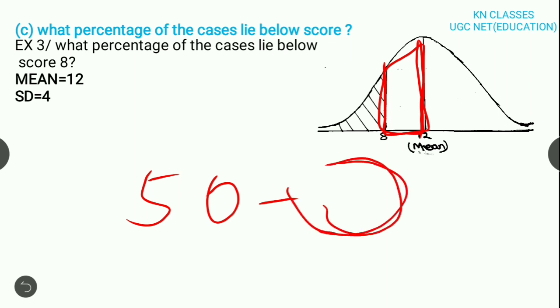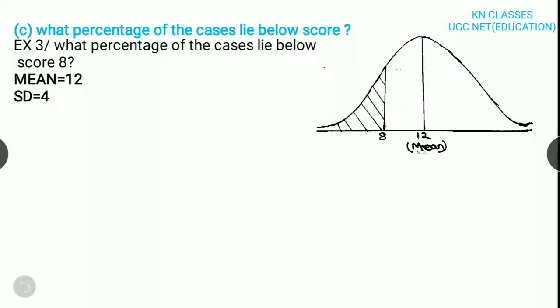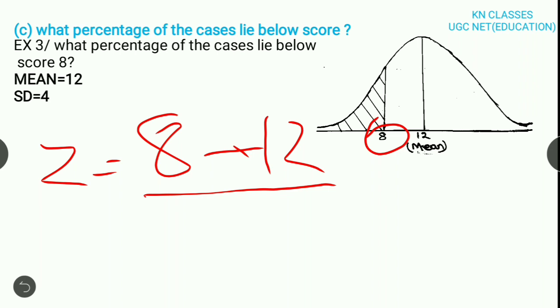I will tell you again. The half of the curve is 50%. Now, we have to find out the cases fall between score 8 to the mean 12. Here, we have a z-score formula. Z is equal to x minus m divided by SD. Here, x means score. Score is 8. Mean is 12. 8 minus 12 divided by 4.